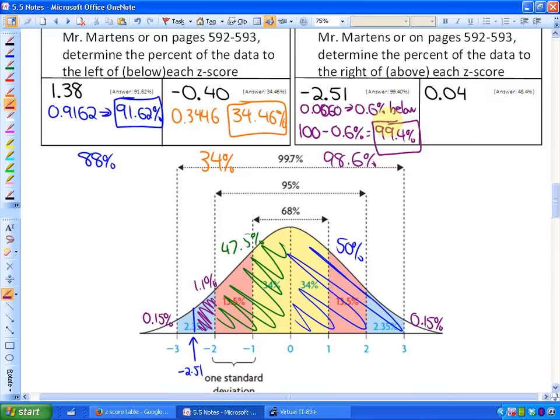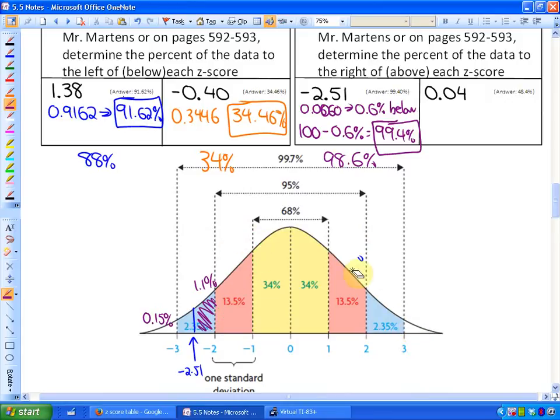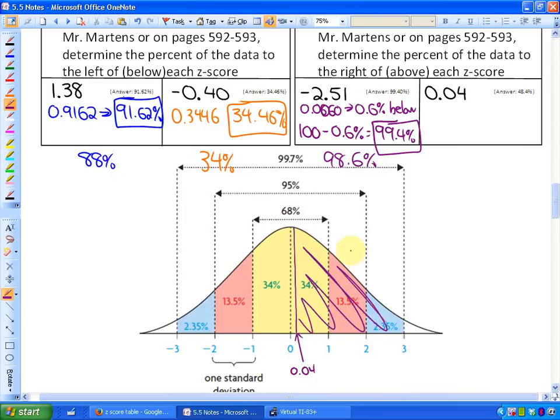The next question, maybe we'll make it our last question in this particular lesson, would be what's above a Z-score of 0.04. 0.04 is really close to the mean. You'll see that Z-score here. A Z-score of 0.04 is roughly right here. So the percent above that Z-score might be just less than 50. I'm going to guess 49%.